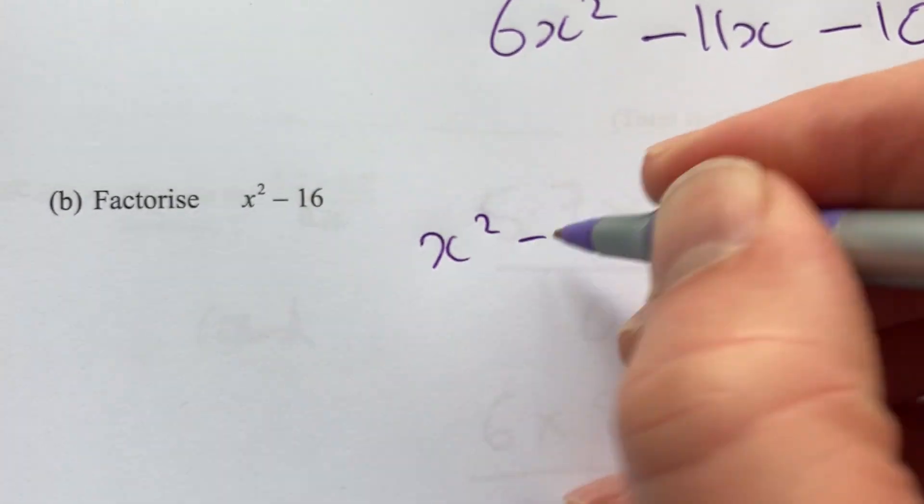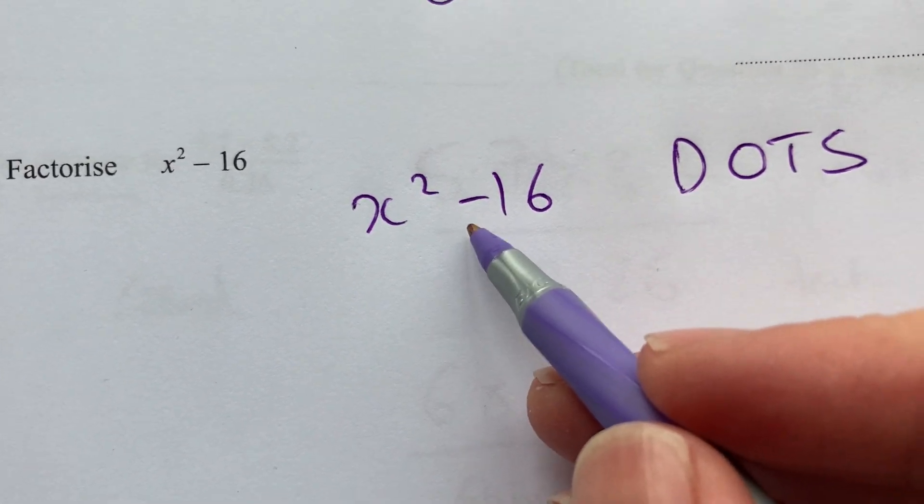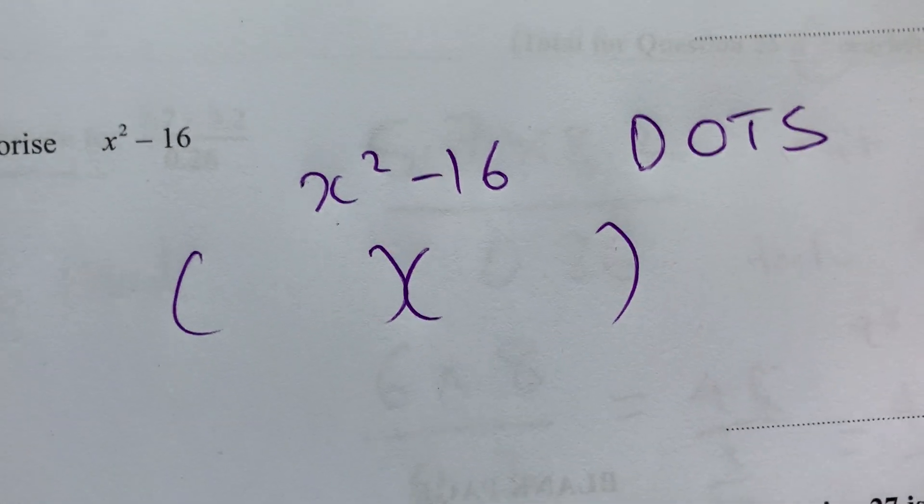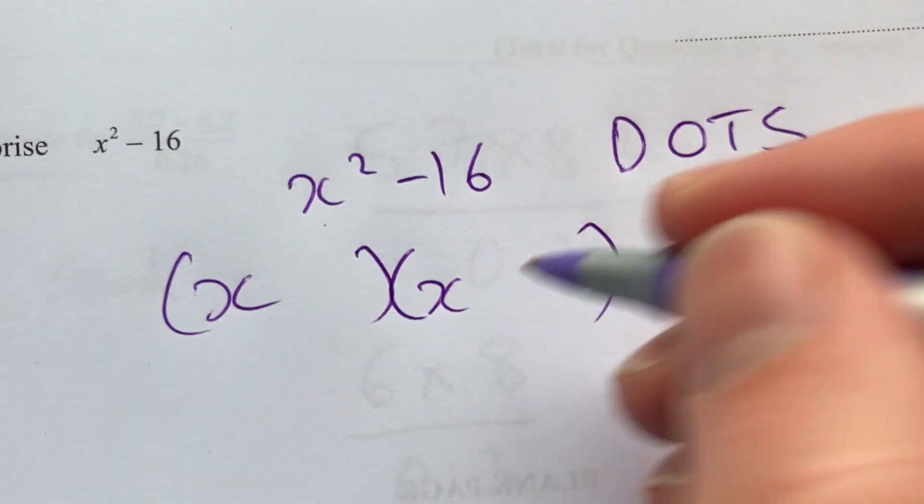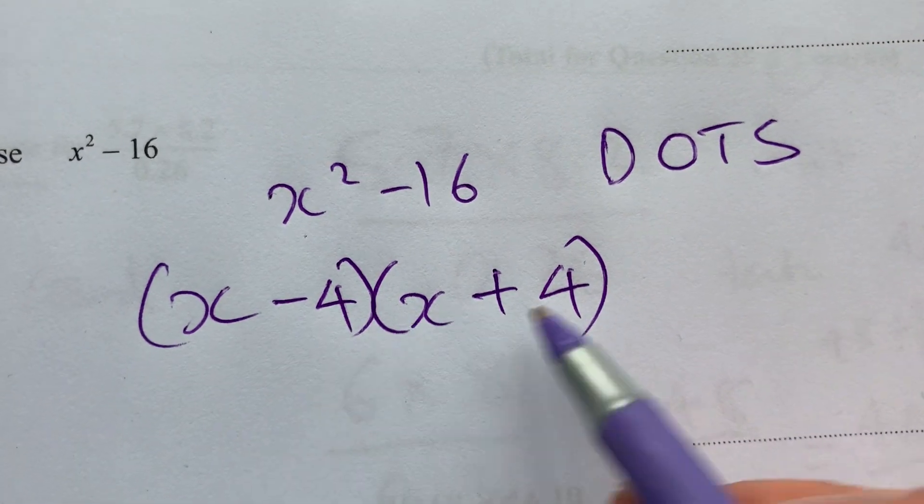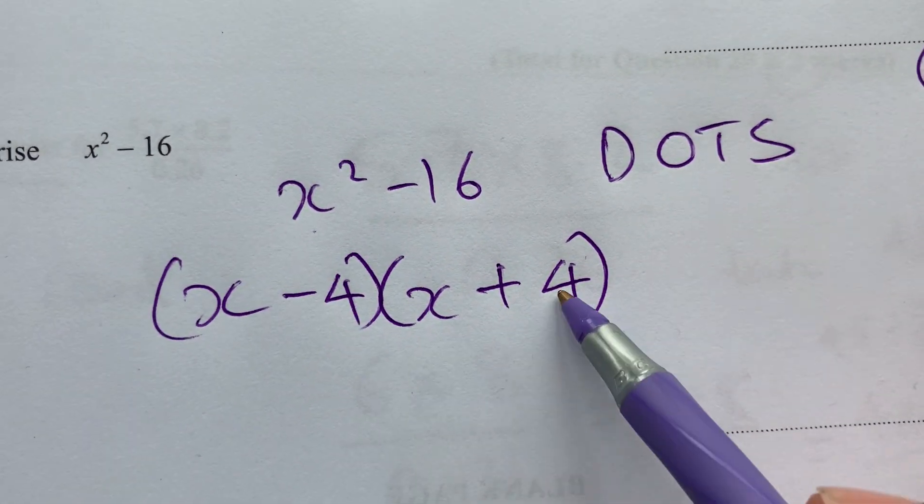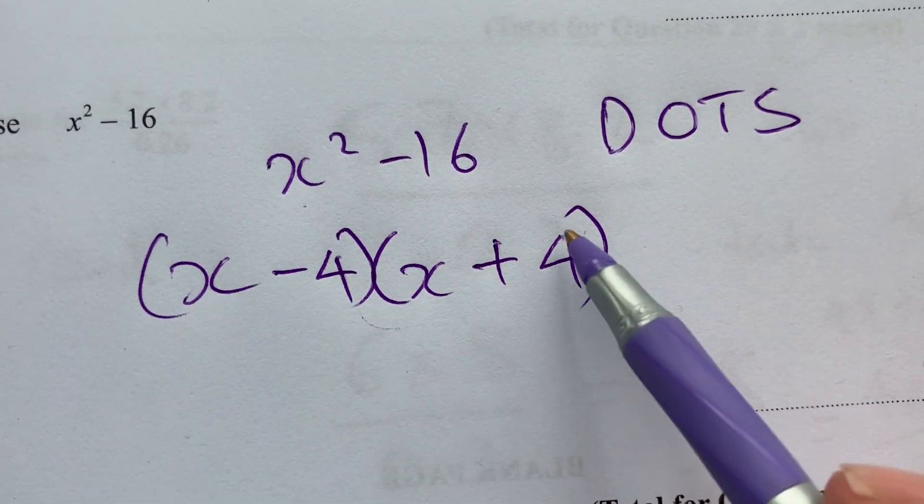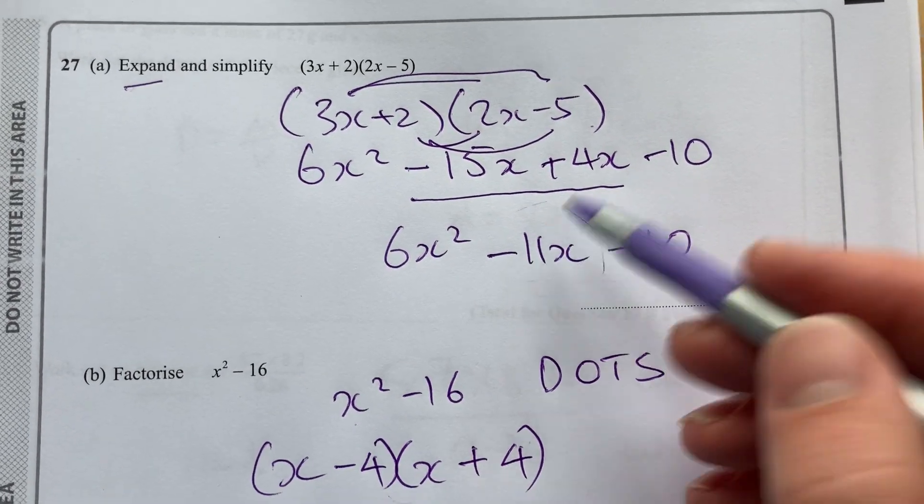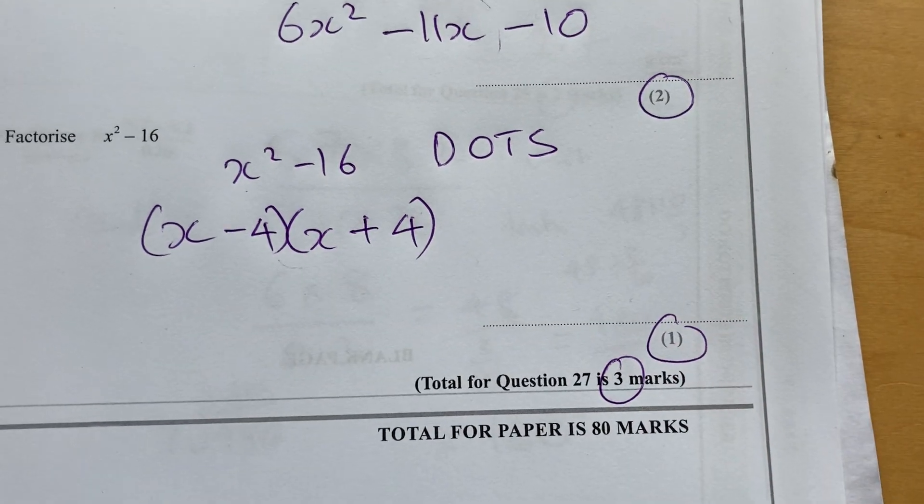Right, factorizing x squared minus 16. This is a difference of two squares. So difference, i.e. subtraction, two terms that are both squares. I want to write them with two brackets. Square root of x squared is x. Square root of 16 is 4, but I need the signs to change so the middle term would fall away. So you can check that by expanding. There's x squared. Then there's minus 16. Minus 4x plus 4x would cancel each other out. So in this case, you don't get a middle term like you would there. And that's another mark to give you a total of three marks to finish the paper.